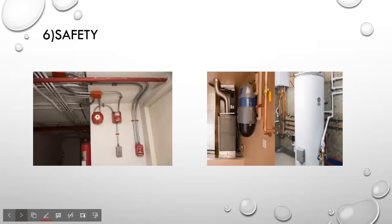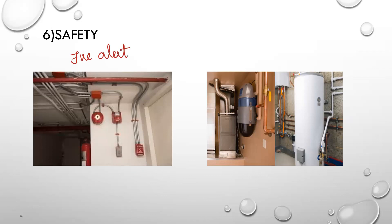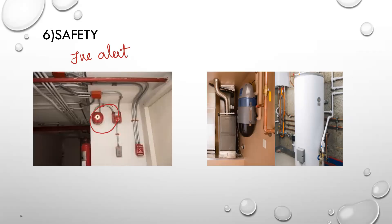Now let us go on to the next one, which is safety. Safety deals with damages caused to people, the operator, or the environment — ensuring no catastrophe. Let us take two examples. The first is a fire alert system: if there is a fire, the system should immediately alert you. If the system is damaged and does not alert, it will cause great damage to life as well as property.